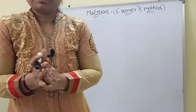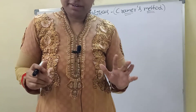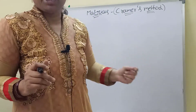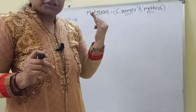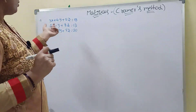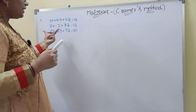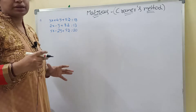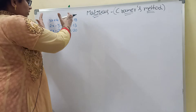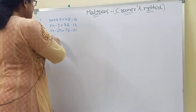Welcome to my channel. Today's topic is Cramer's method. The inverse matrix and inverse method have already been explained. This is the second topic — Cramer's method. The Gauss-Jordan method is not covered today. Today we are discussing Cramer's method. Given any linear equations, we will find the values of X, Y, Z using this method.